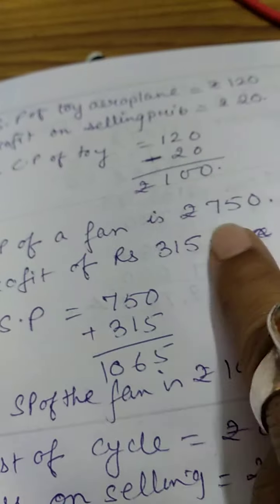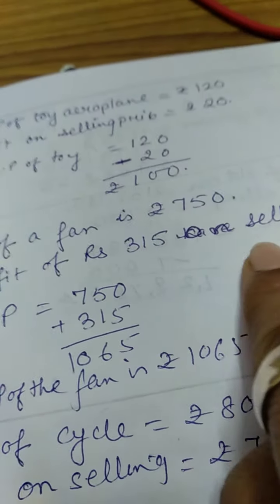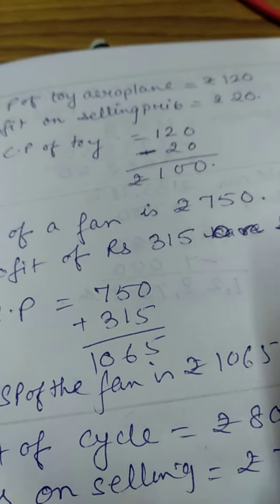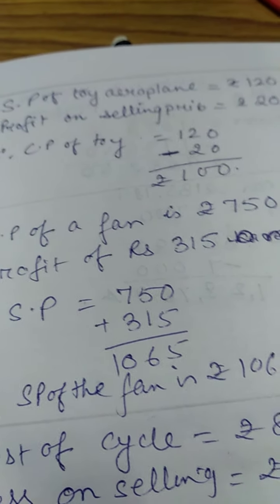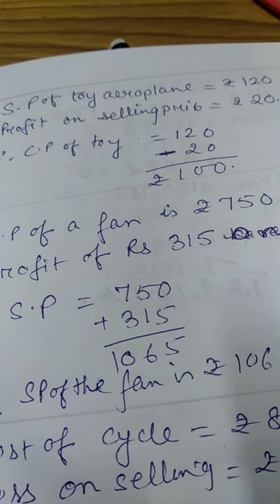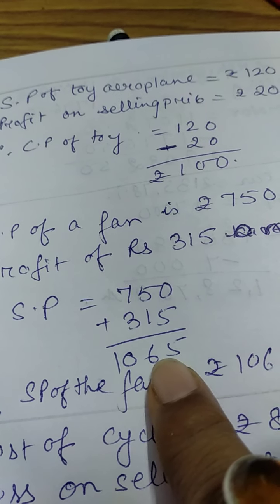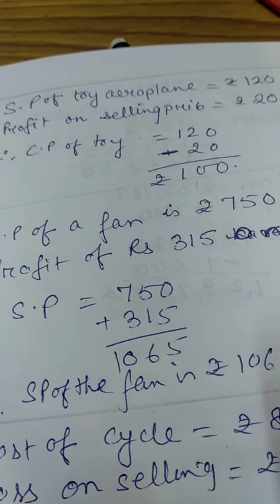CP of the fan is Rs. 750 and profit of Rs. 350 on selling the fan was done. So, what will be the SP? So, 750 because the formula is CP plus profit, Rs. 750 plus Rs. 350. It is Rs. 1065 is the selling price.